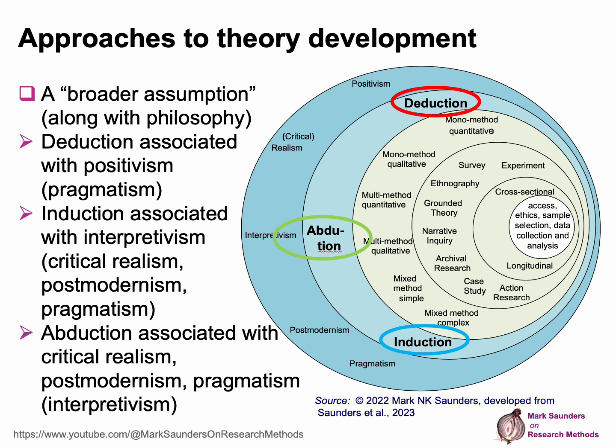What we see here is that these three approaches to theory development do link to research philosophies, but it's not a one-to-one relationship. It's important to remember that in the research onion we're only looking at five widely used research philosophies in business and management, so we haven't, for instance, considered feminism and other such philosophies. This is just some of them.